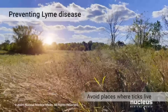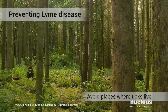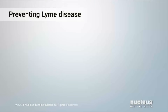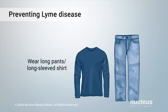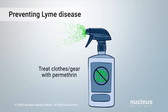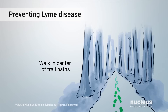One way to prevent Lyme disease is to avoid the places where ticks live. If you do go into these areas, use an insect repellent that contains chemicals such as DEET or picaridin. Wear long pants and a long-sleeved shirt. Treat your clothes and gear with a chemical that kills insects called permethrin, and walk in the center of trail paths to avoid grassy or brushy areas.